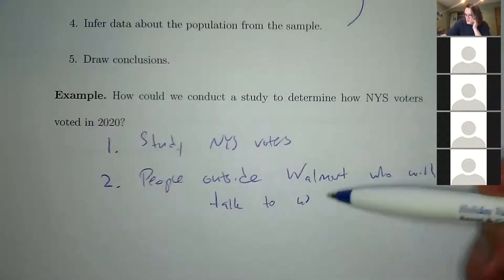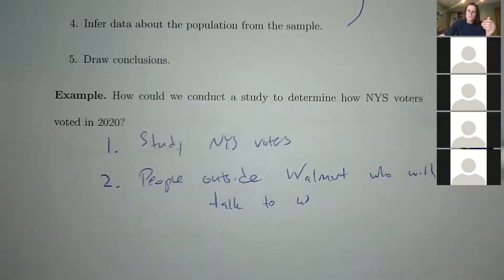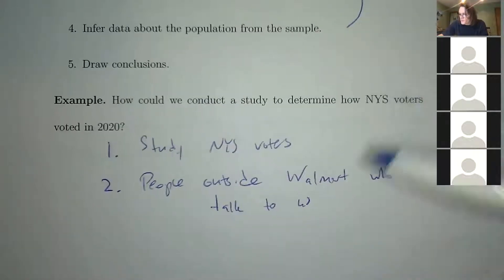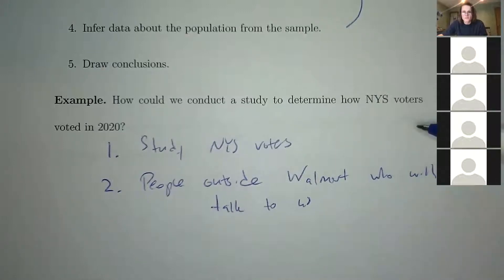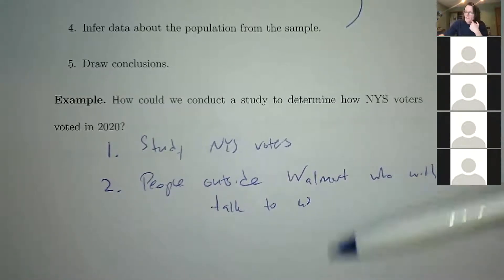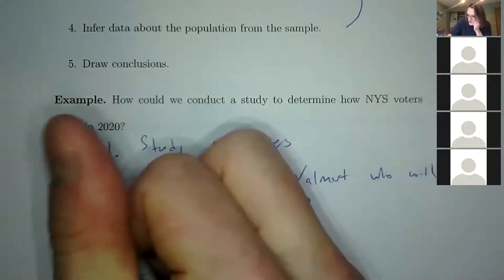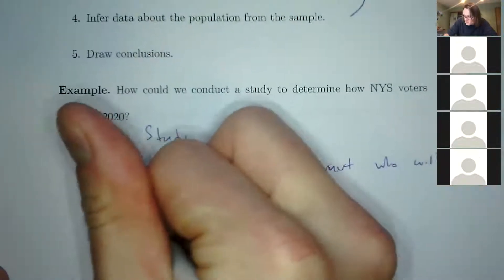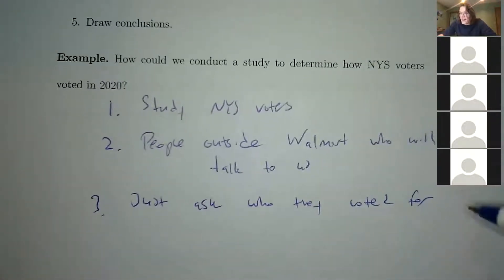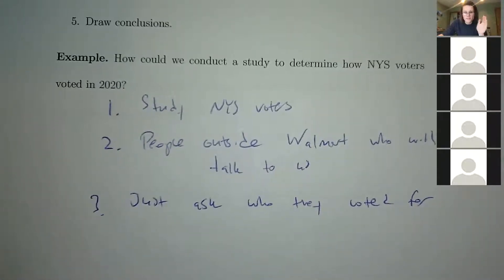An interesting point: not only are the people outside Walmart going to skew your results, but the people who will talk to you are different from those who won't. People willing to talk to a stranger outside Walmart might have a different worldview than those who won't. So you're getting a different result just from who and how you ask the question.